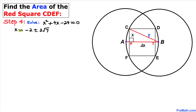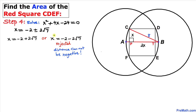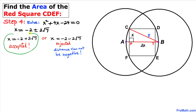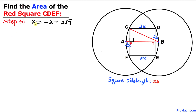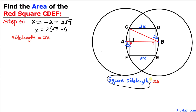So our x value is -2 ± 2√7. Separating the two solutions: we reject x = -2 - 2√7 since it represents a negative value, and distance cannot be negative. Therefore we accept x = -2 + 2√7, which can be written as 2(√7 - 1). We know the side length of the square is 2x.